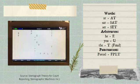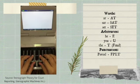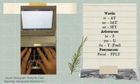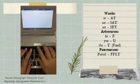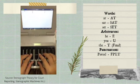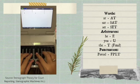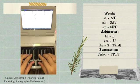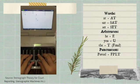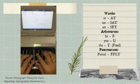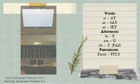We are also introduced with punctuation. The stroke for a period is final F, P, L, and T. In this slide, we can see on the left side we have the machine. Notice how the words, arbitraries, and punctuation are being written using the machine. So you have SAT, AT, SAT, then two asterisk key meaning paragraph, then E-U, paragraph, and then F, P, L, T — period.